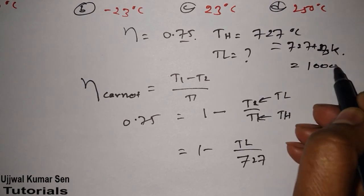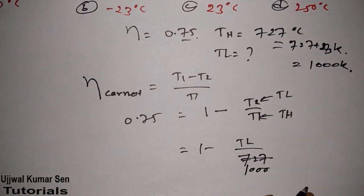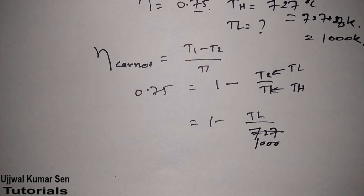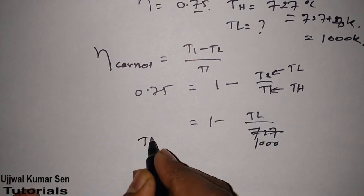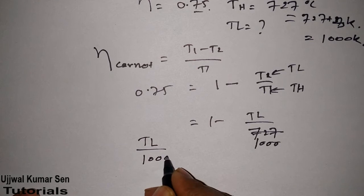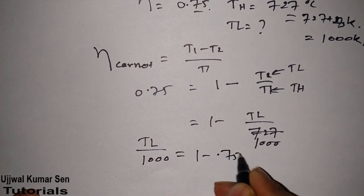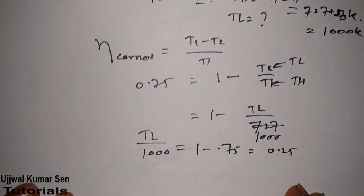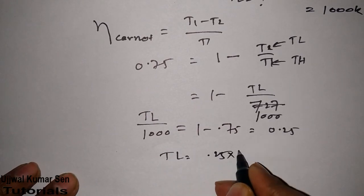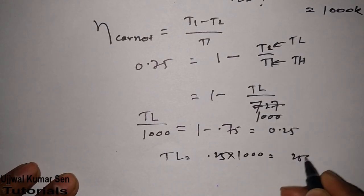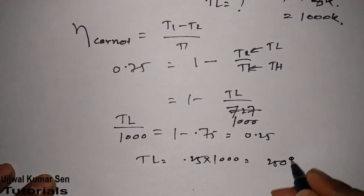Write 1000 here, then you can get the right answer. Sending this to the other side: TL by 1000 equals 1 minus 0.75, which equals 0.25. So TL equals 0.25 times 1000, that means 250 Kelvin.